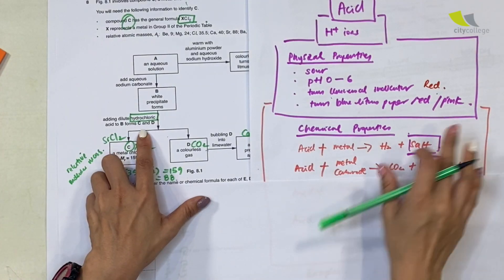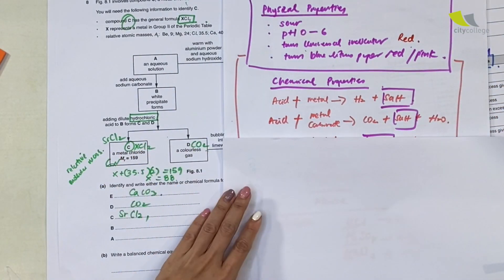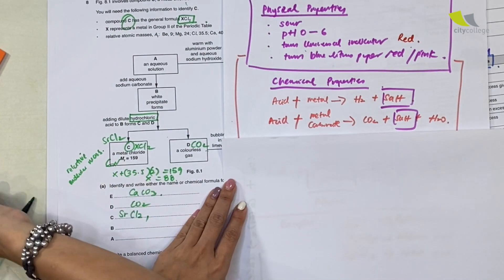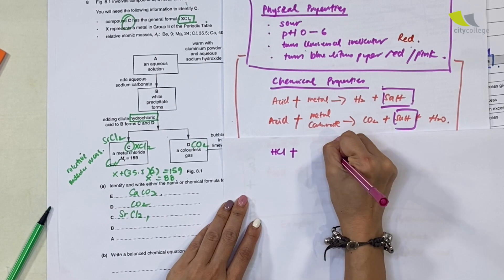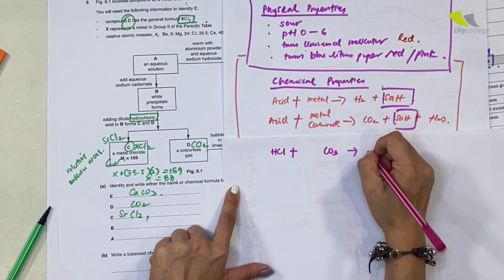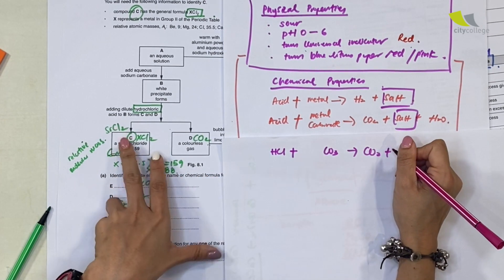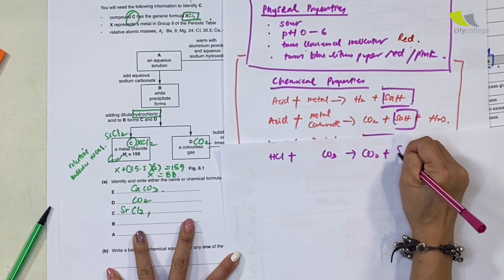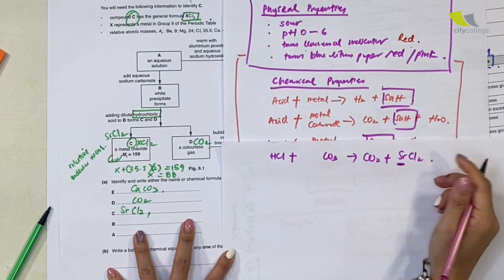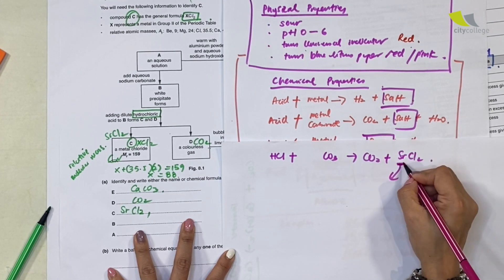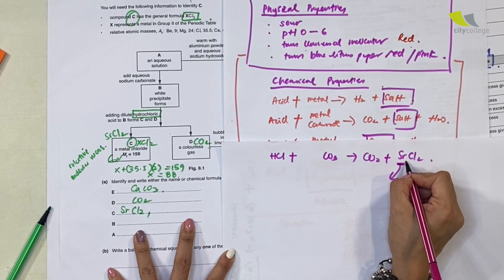Like I always say, every time an acid is added, go and recall this property here: acid reacts with what will give you carbon dioxide and a salt? Obviously, this is a metal carbonate.